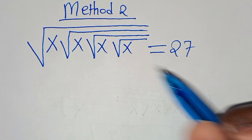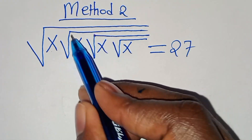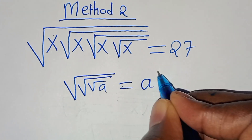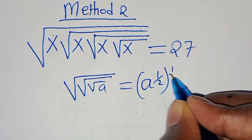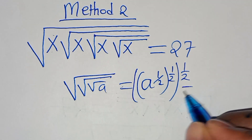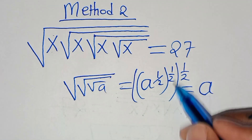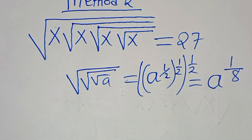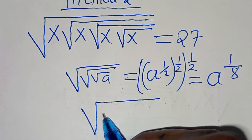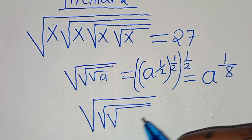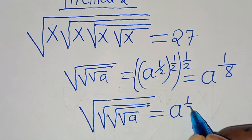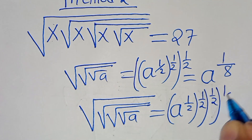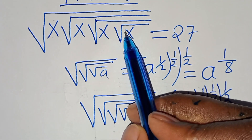The third nested square root of a is expressed as a to the power of one half, raised to the power of one half, then raised to the power of one half again. This equals a to the power of one half times one half, which is one quarter times one half, giving a to the power of one eighth. The fourth nested square root — four square root signs — gives a to the power of one sixteenth.